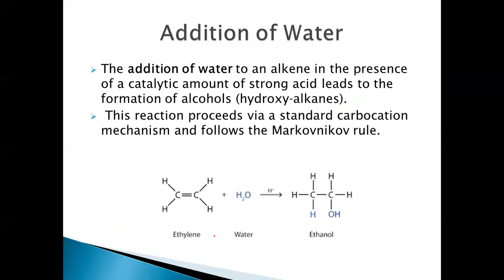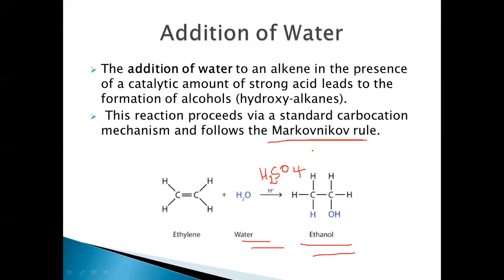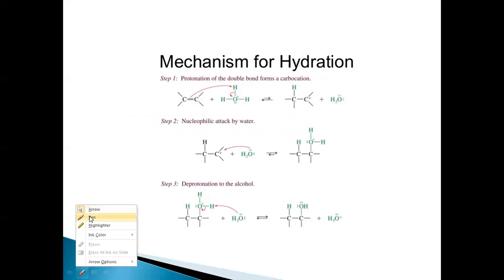Now let's see the addition of water to alkenes (hydration). This takes place in the presence of a strongly acidic catalyst like H₂SO₄, resulting in the formation of an alcohol. For example, when water is added to ethylene in the presence of H₂SO₄, we get ethanol. H and OH are added to adjacent carbon atoms, and for unsymmetrical alkenes this follows Markovnikov's rule, where the negative part of the addendum goes to the carbon with fewer hydrogens.